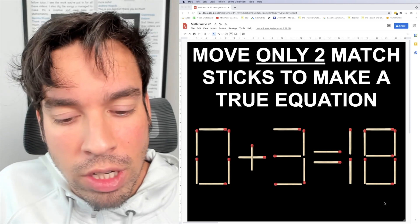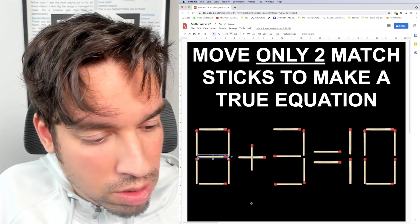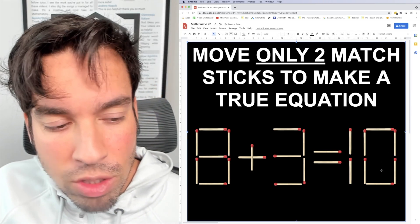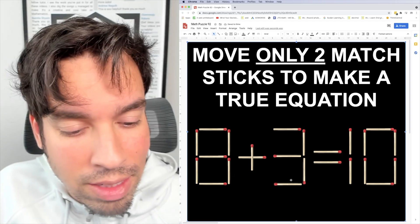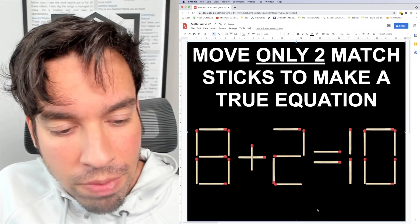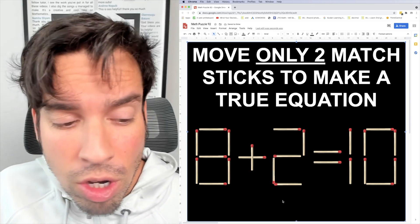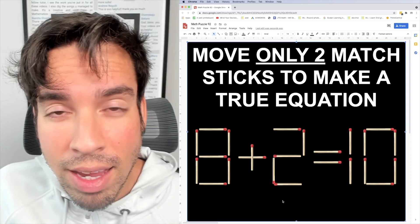So the first solution involves doing this: simultaneously turning this into a 10 and that into an 8, and then shifting that 3 to a 2. And we have 8 plus 2 equals 10, done.